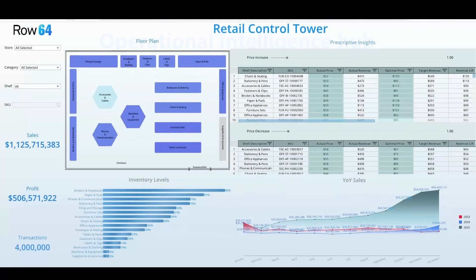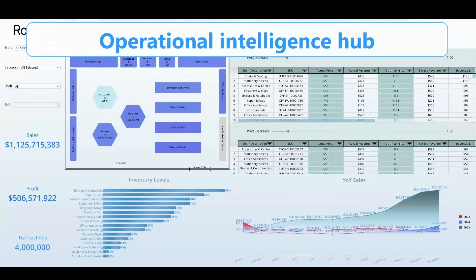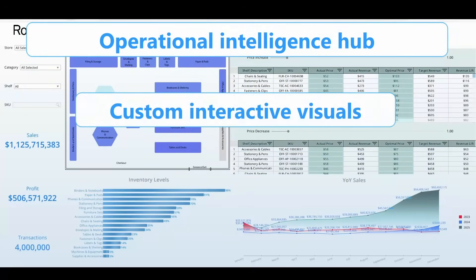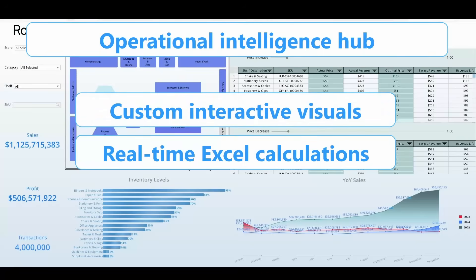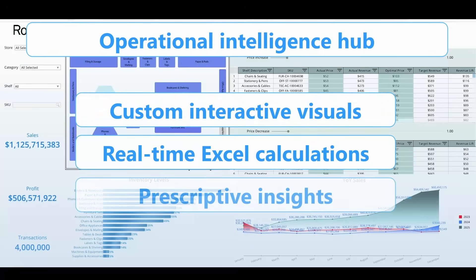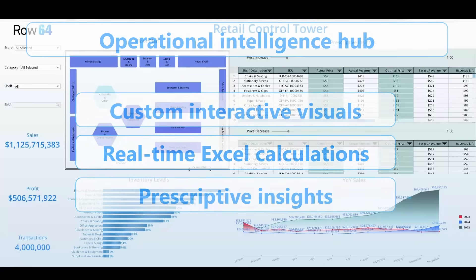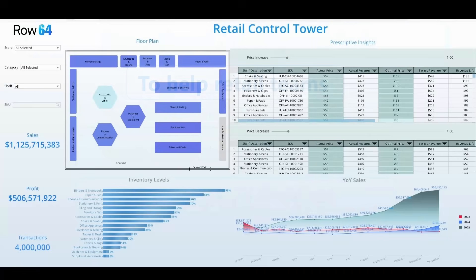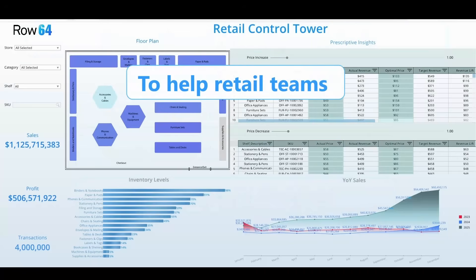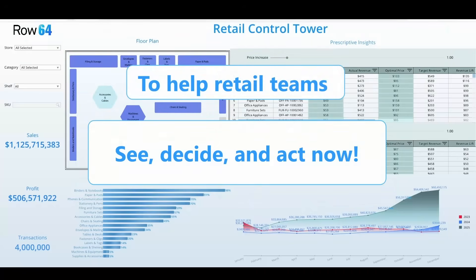Row 64 removes those bottlenecks by providing a unified, easy-to-use interface with custom interactive visuals, real-time Excel calculations on millions of rows, and prescriptive insights directly in the hands of decision makers. Retail teams need the ability to see, decide, and act as fast as conditions evolve — and that is exactly what Row 64 delivers.